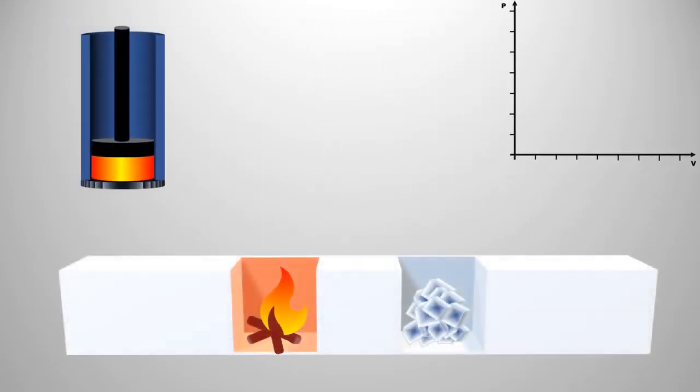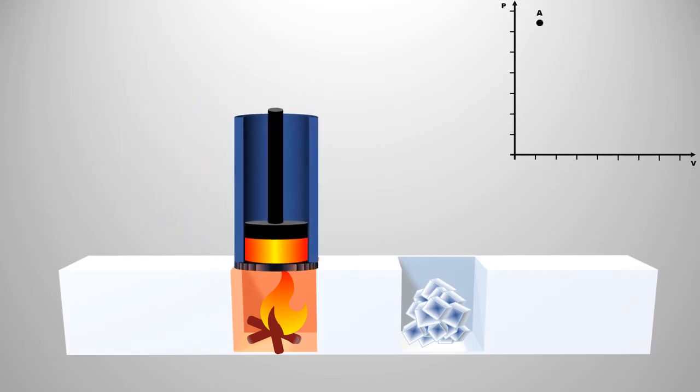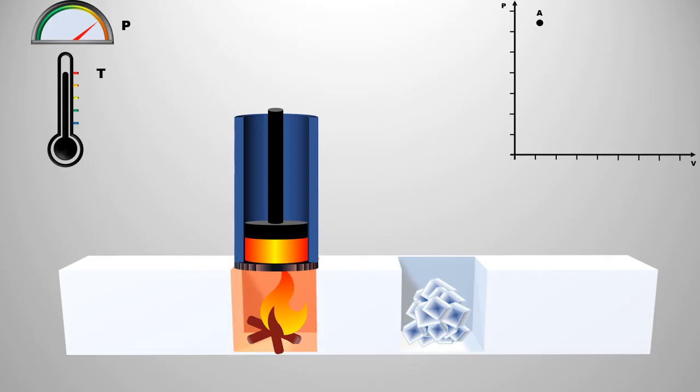Carnot engine goes through four different stages of the Carnot cycle, which is graphically displayed on a PV graph. For this, first place the cylinder on the hot reservoir. Since the temperature of the reservoir is higher than the temperature of the gas, the heat flows from the hot reservoir to the gas, due to which the gas starts to expand. Since due to heat transfer, gas is expanding, therefore the temperature of the gas remains constant. This process is called isothermal expansion.